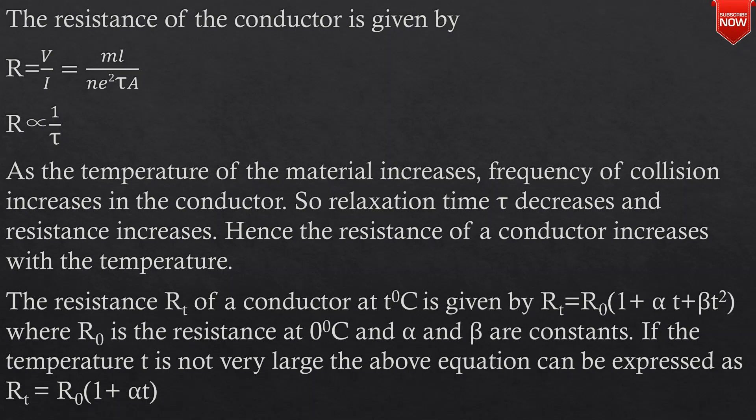The resistance RT of a conductor at T degrees Celsius is given by RT equals R0 into 1 plus alpha T plus beta T squared, where R0 is the resistance at 0 degrees Celsius and alpha and beta are constants.